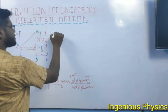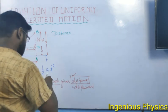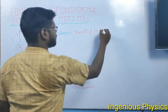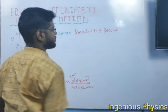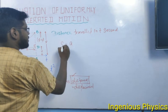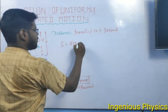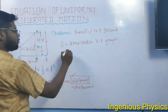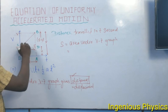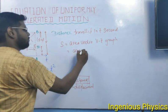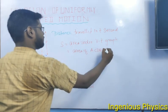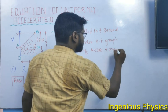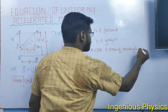The area of the triangle is half times base times height, and the area of the rectangle is L times B. We add both areas together to get the total distance. So let's start the calculation — it is very easy.